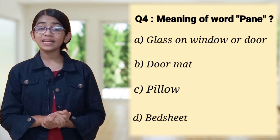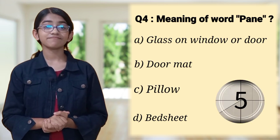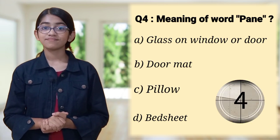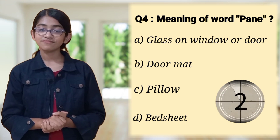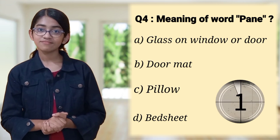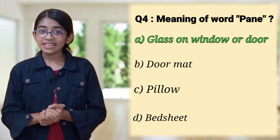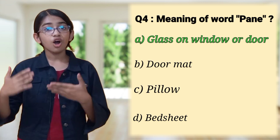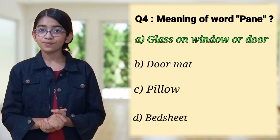Now, the fourth and the last question is, what is the meaning of the word pane? The correct answer is A — glass on a window or a door.